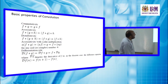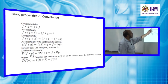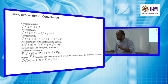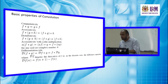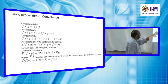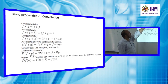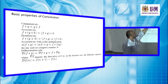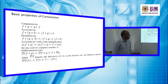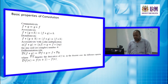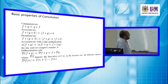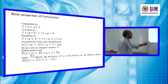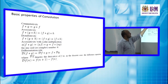Convolution is also associative: for three functions f, g, and h, we can first convolve g and h and then convolve the result with f, which is equivalent to first convolving f and g and then convolving the result with h.